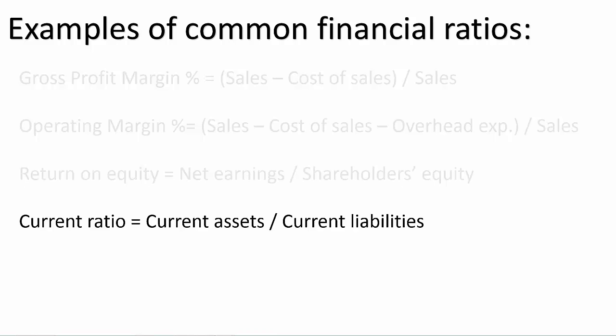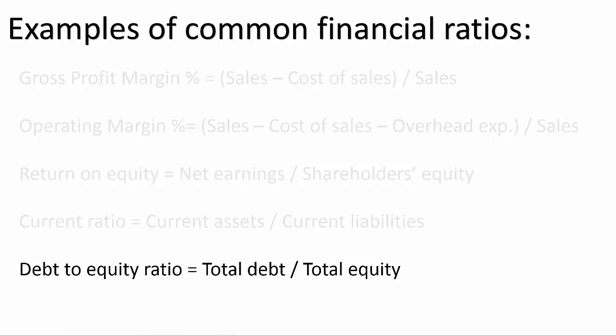Current ratio, which is a measure of solvency — that is, the ability to pay bills as they come due. It's calculated by taking your current assets, assets that can be easily converted to cash, and dividing it by your current liabilities, which are any obligations that are payable within one year. And finally, your debt to equity ratio, which is a measure of financial leverage — that is, the degree of debt used by the company to finance its operations.